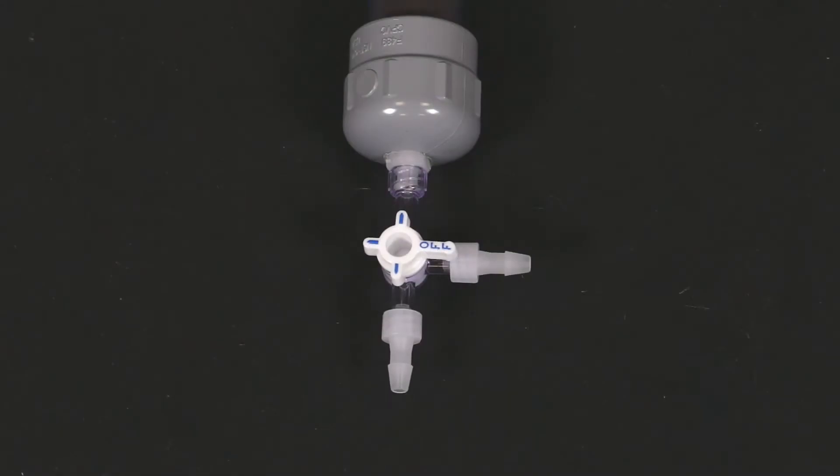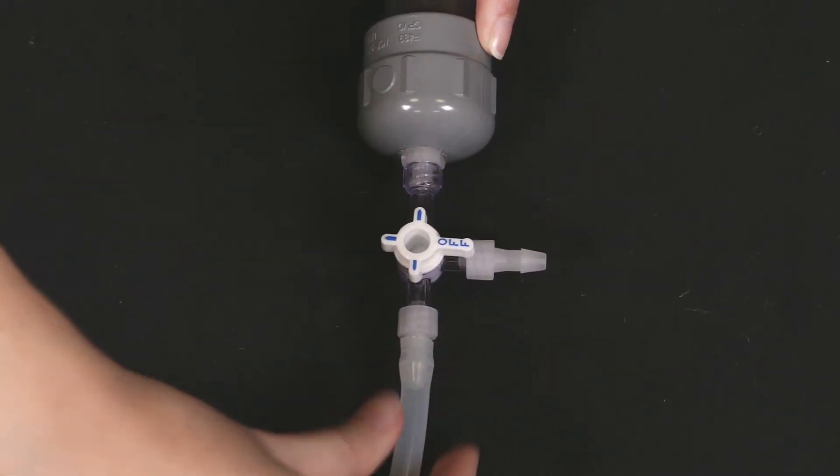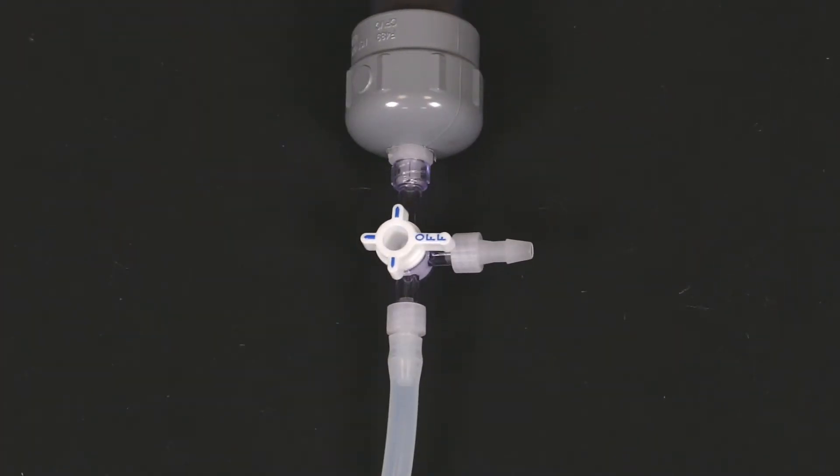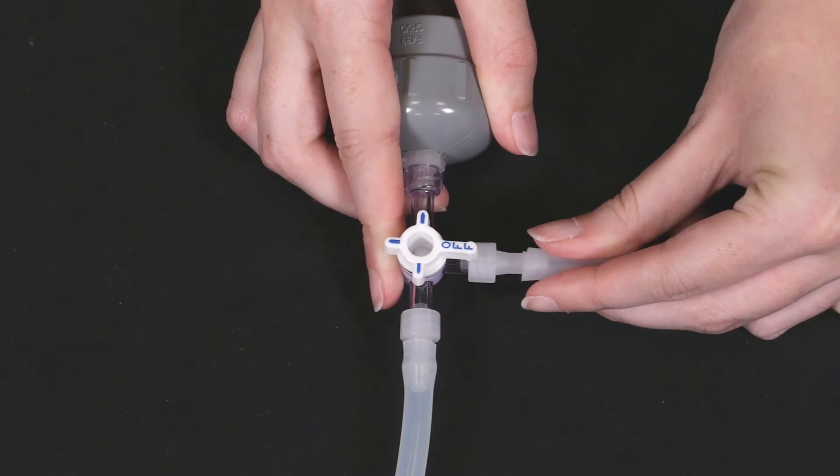To hook up the ozone destruct system, first make sure the off valve on the three-way stopcock is pointed toward the sidearm of the destruct. You can then attach silicone tubing from any ozone outstraw on our glassware to the bottom of the destruct and then attach any accessory to the sidearm of the destruct for applications that require one.